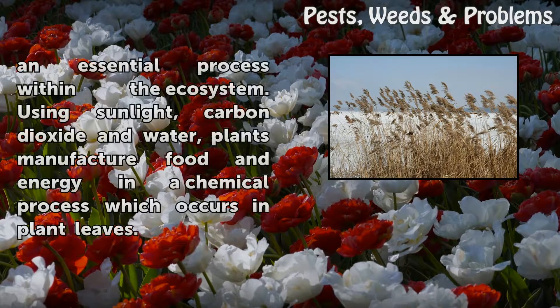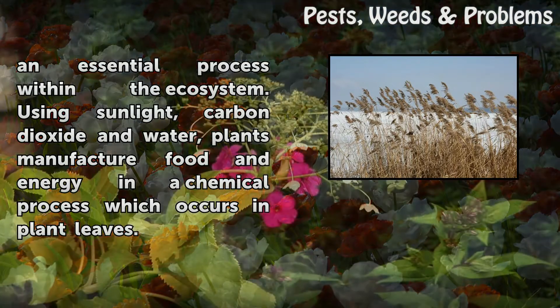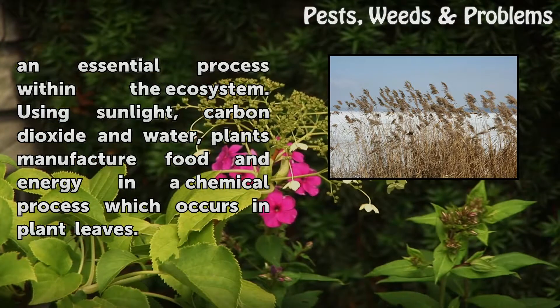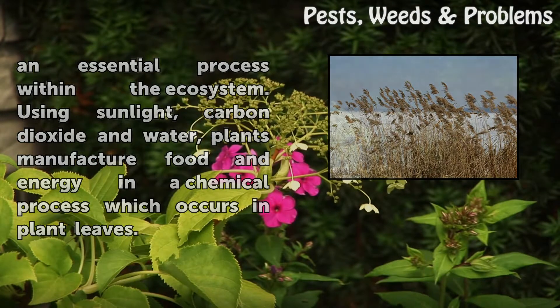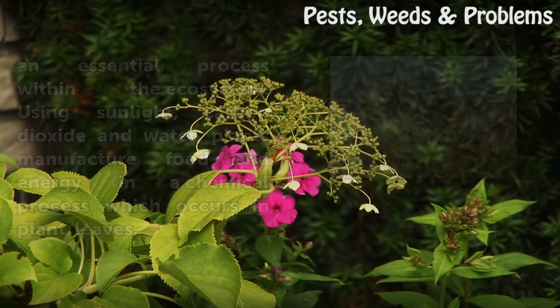Photosynthesis is an essential process within the ecosystem. Using sunlight, carbon dioxide, and water, plants manufacture food and energy in a chemical process which occurs in plant leaves.